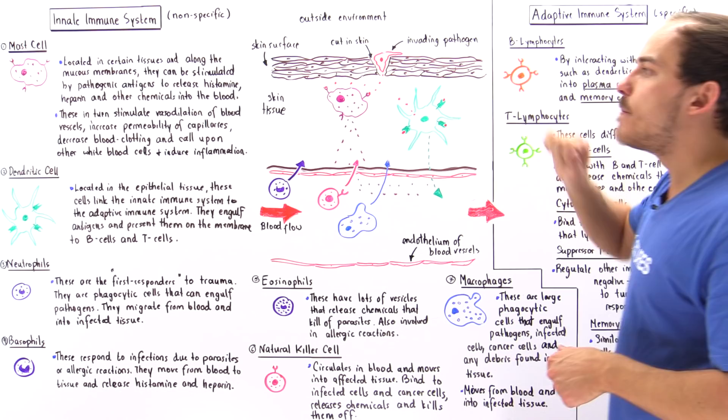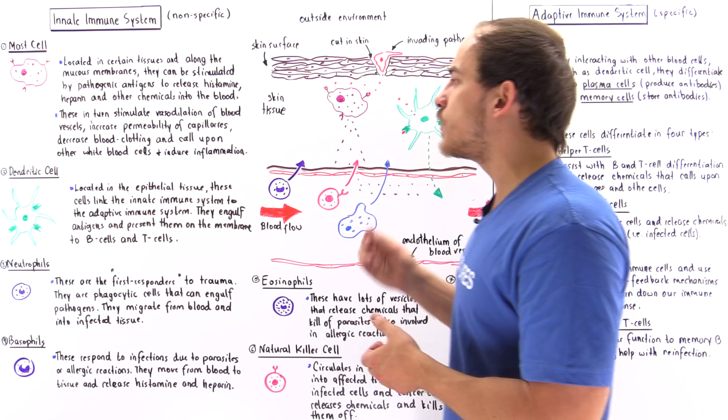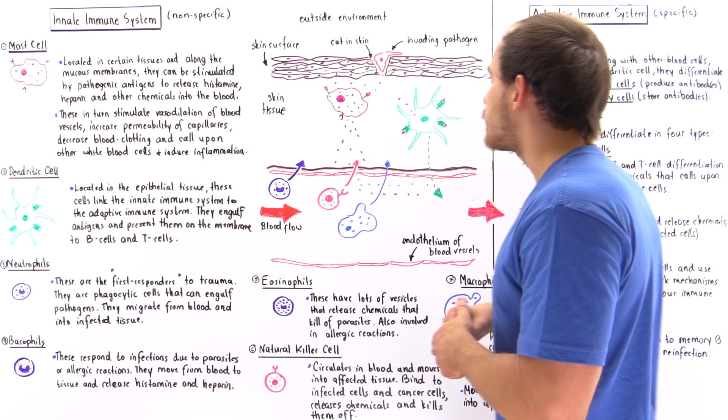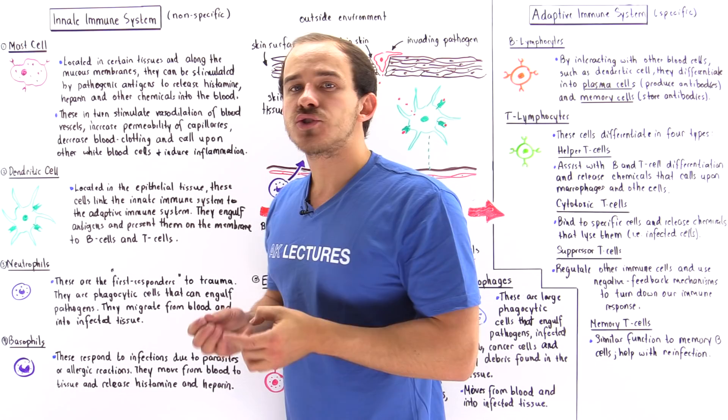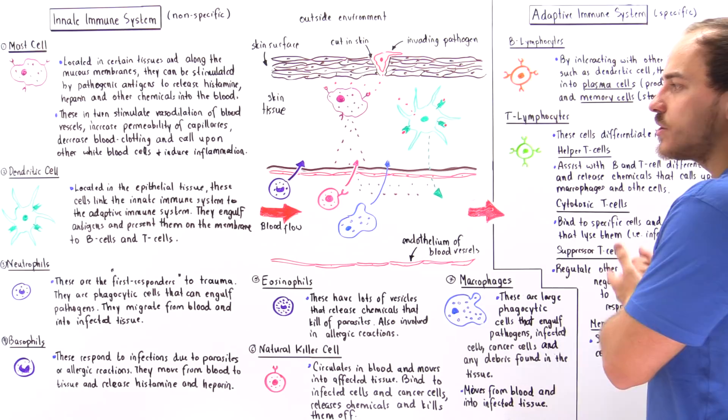These chemicals essentially initiate the process of inflammation that takes place in the innate immune system. The mast cell also releases cytokines, which call upon other cells such as macrophages, neutrophils, and other cells as we'll discuss in just a moment.